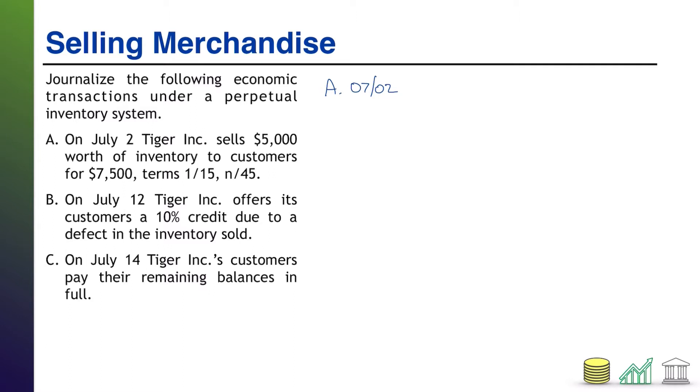And specifically, we have charged the customers $7,500. So we are going to debit accounts receivable for $7,500. That's what the customers owe us. And we are going to credit sales revenue for $7,500. We have earned revenue equal to what we charge the customer for the product.